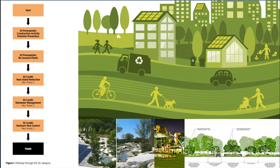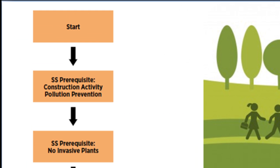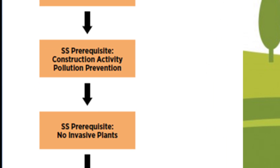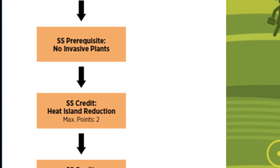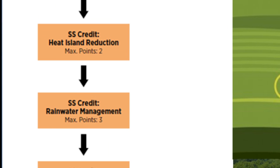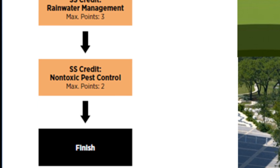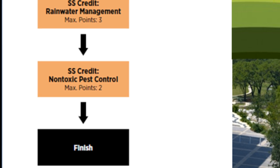Figure 1 shows the pathway through the SS category. Starting with the prerequisite Construction Activity Pollution Prevention, then to the next prerequisite No Invasive Plants, and then the credits: Heat Island Reduction for 2 points, Rainwater Management for 3 points, and Non-Toxic Pest Control for 2 points.